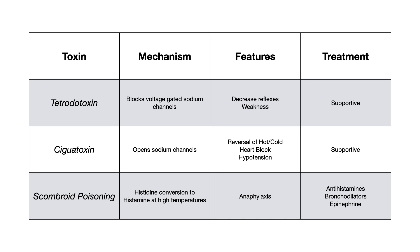For tetrodotoxin: key feature is decreased reflexes. For ciguatoxin: reversal of hot and cold sensation. For scombroid poisoning: anything that looks like anaphylaxis. Mechanistically — tetrodotoxin blocks voltage-gated sodium channels causing decreased depolarization, so clinical features resemble less action potential firing. Ciguatoxin opens sodium channels causing more depolarization and overfiring, hence reversal of hot and cold. Scombroid is literally histidine converting to histamine — too much histamine equals anaphylaxis.